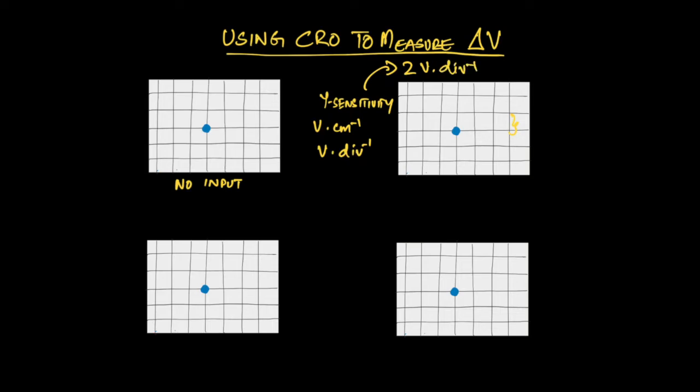What happens if this blue dot on the top right chart moves up here to where this yellow dot is now located? Our trace has moved upwards by two divisions. So it's quite simple, we can calculate how much the voltage input was that was applied to this scenario.